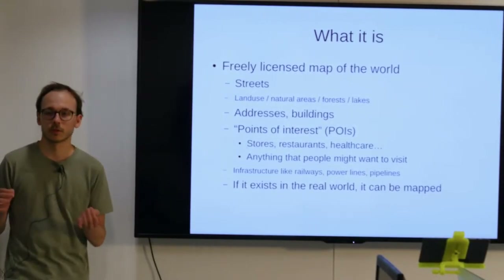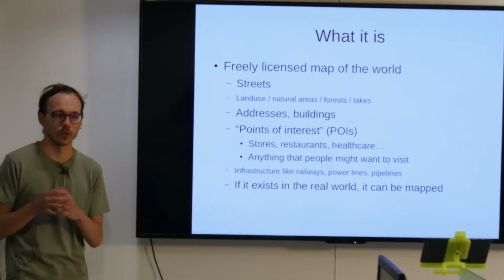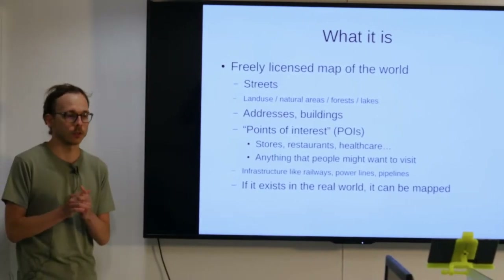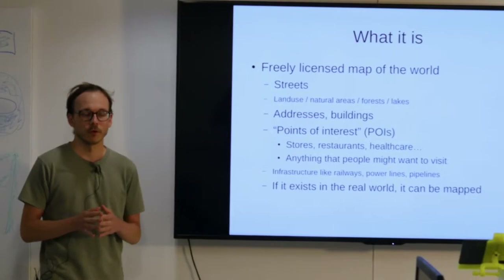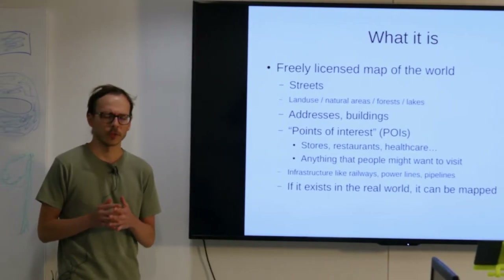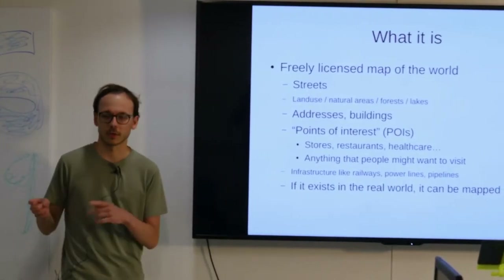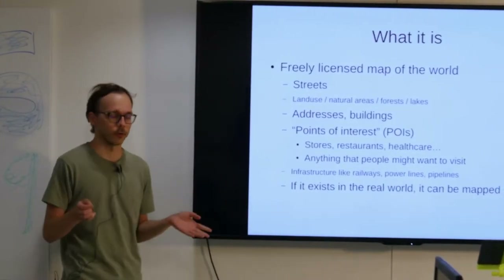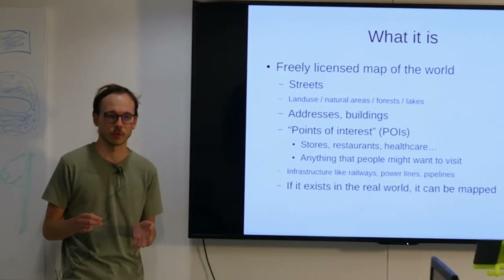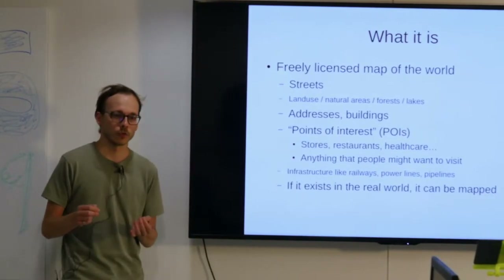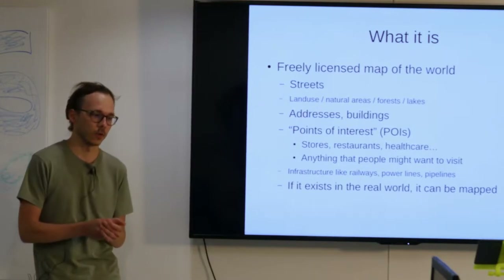So we've got land use, forests, where lakes are, address points, buildings, and things like points of interest — stores, restaurants, healthcare units. It's stuff that people might want to visit, want to search for by name, or find out how to get to.